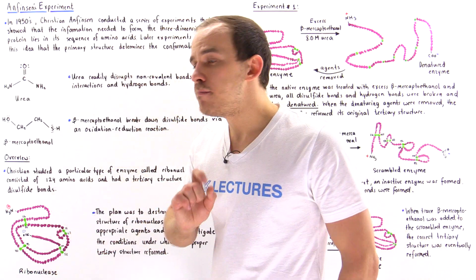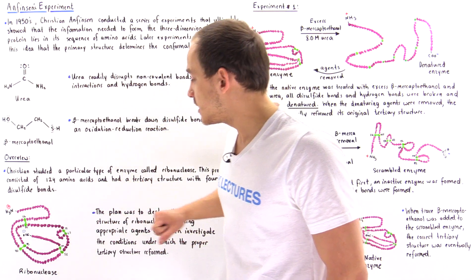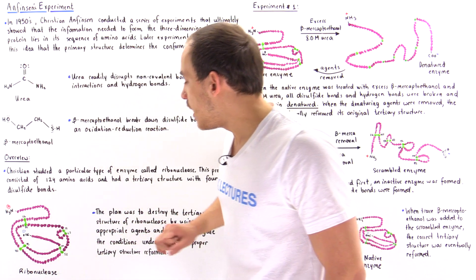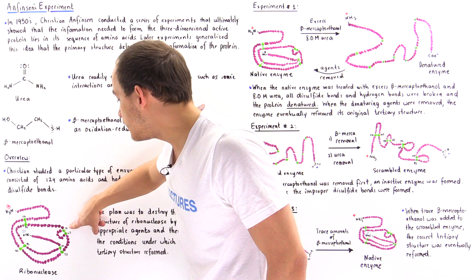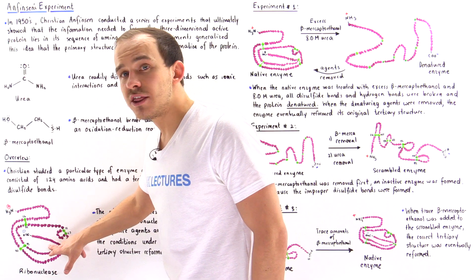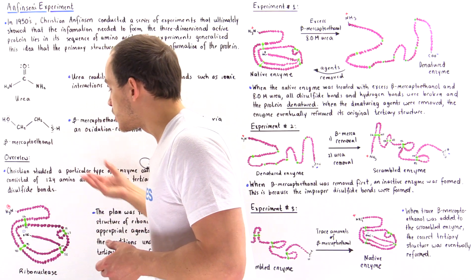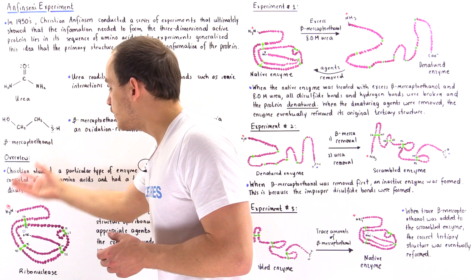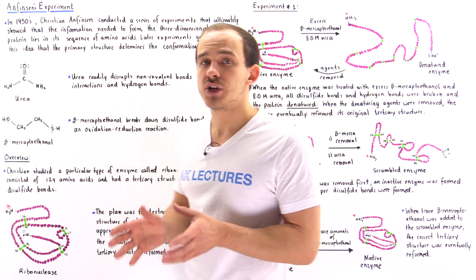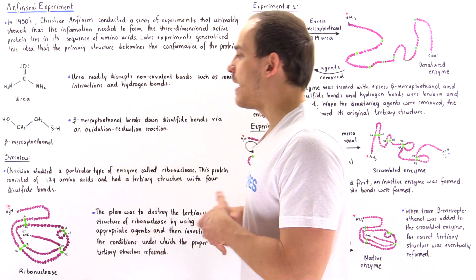The four disulfide bonds connect: the 26th and 84th cysteine amino acids, the 40th and 95th, the 65th and 72nd, and the 58th and 110th cysteine amino acids. This three-dimensional structure describes the native conformation of ribonuclease — the biologically active structure of the enzyme.